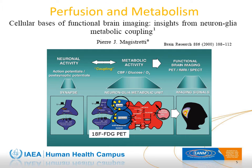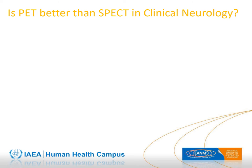Glucose metabolism is closely coupled to neuronal function, and as glucose consumption is coupled with oxygen consumption, regional cerebral blood flow is also coupled with glucose consumption. Therefore, both brain metabolism as evaluated by FDG-PET and brain perfusion as evaluated by perfusion SPECT are widely used when neuronal integrity and function need to be assessed, as in neurodegenerative diseases or epilepsy.